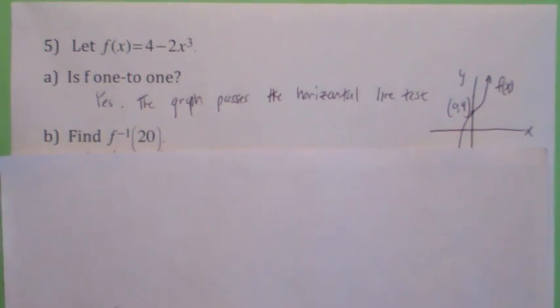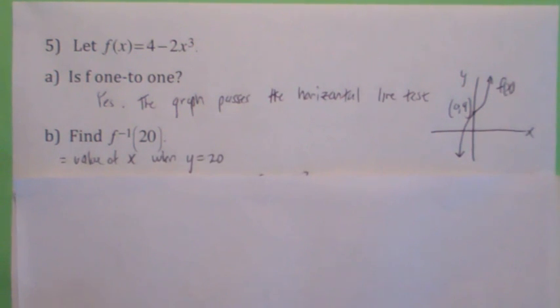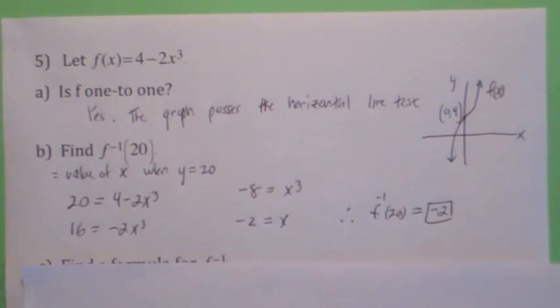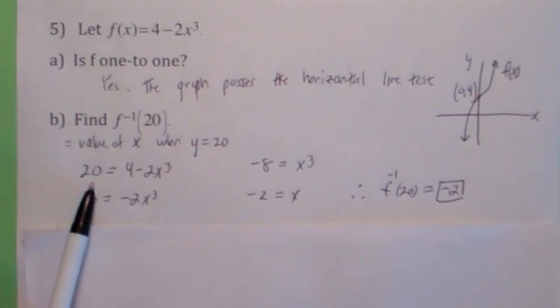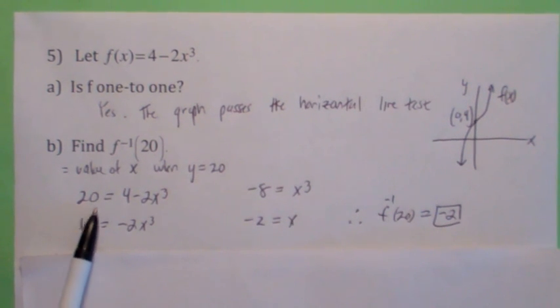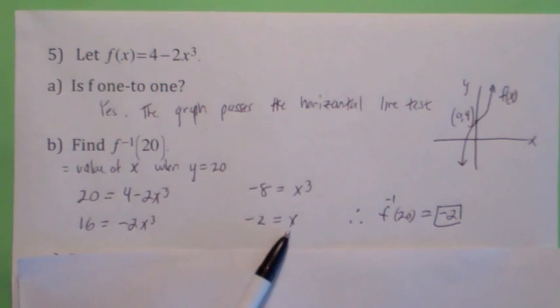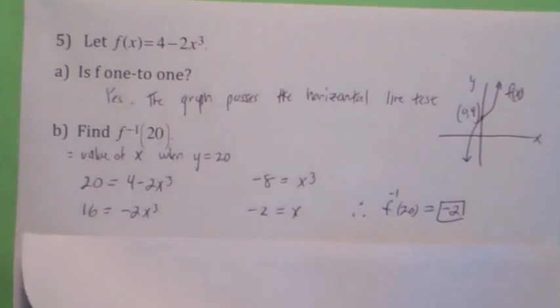Okay, without finding the formula for f inverse, what is f inverse of 20? That's the value of x when y equals 20. So what we're going to do here is we're going to set y equal to 20 and solve this equation for x. When you do that, you get x equals negative 2. So therefore, f inverse of 20 is negative 2.